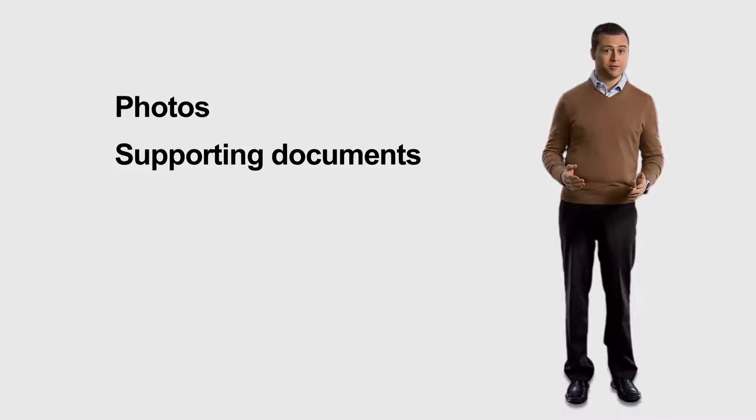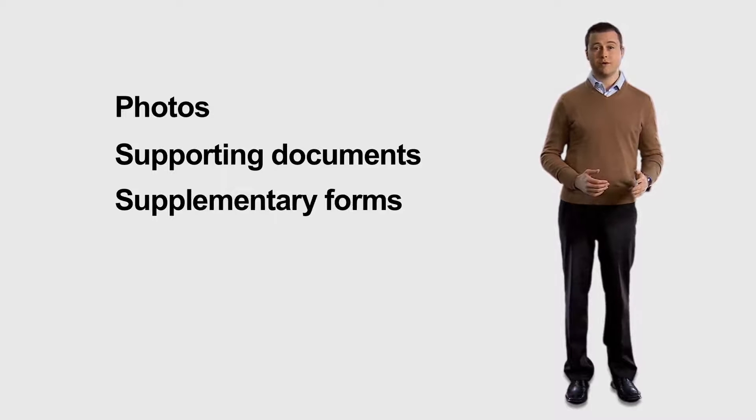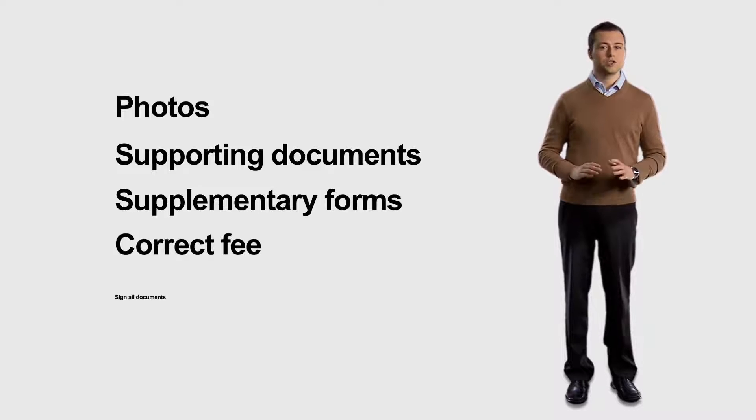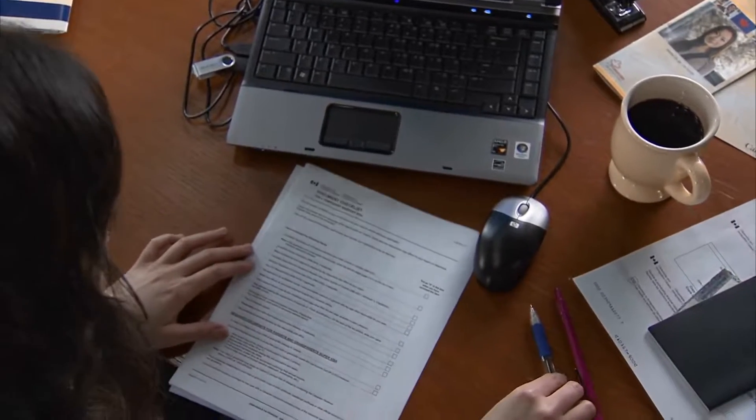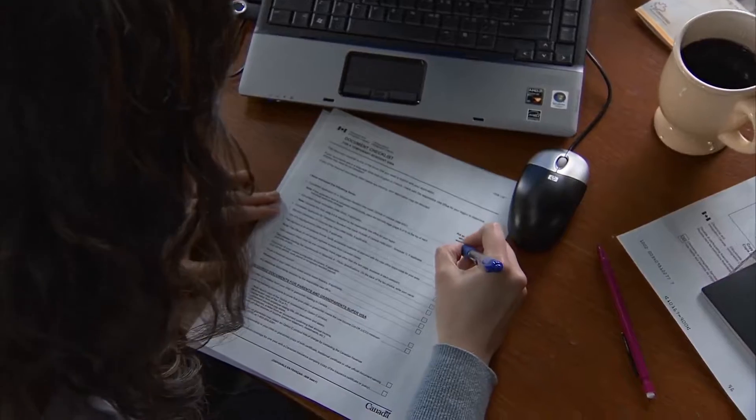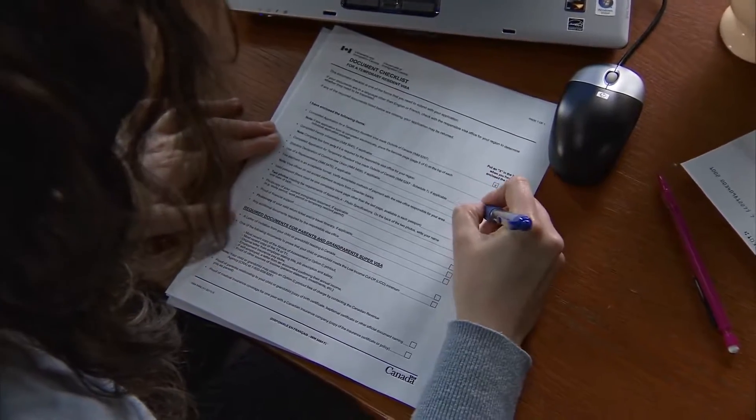You're almost ready to send your application package to CIC, right? It's time to stop and review everything. Have you included photos, supporting documents, and all required supplementary forms? Don't forget to include the correct fee. Make sure you double-check the amount and include it in full. Sign all documents related to your fees. Do one last review of the document checklist in your application kit. Make sure you have included all the information and materials we require. Remember, it is important to send a complete application to avoid processing delays and get on your way faster.